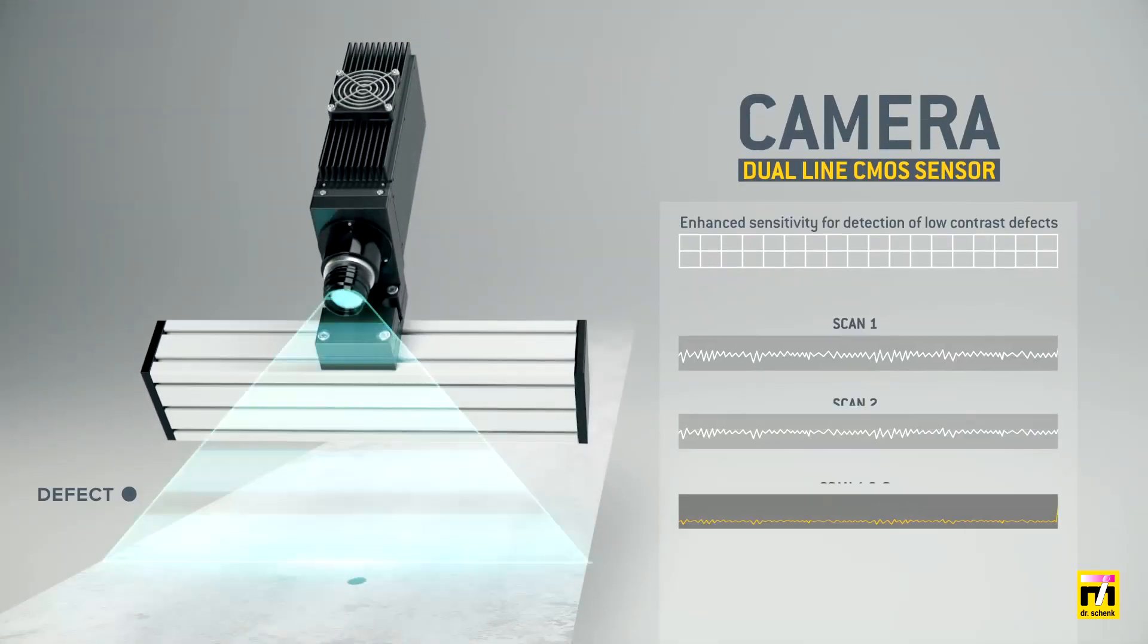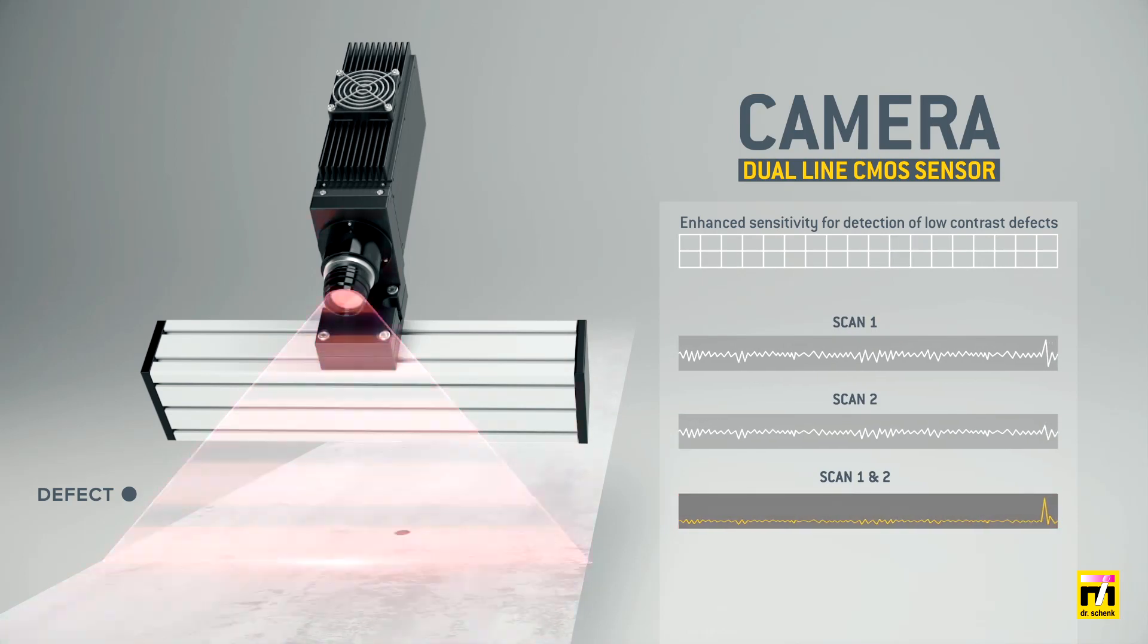Each camera scans every defect twice. The result is an optimized signal-to-noise ratio and increased sensitivity, for example, to reliably detect low-contrast defects.